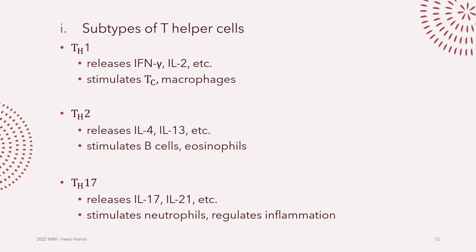T helper cells are not just one type — there are different subtypes. Focus on TH1, TH2, and TH17. TH1 typically releases interferon-gamma and interleukin-2 and is important in stimulating cytotoxic T cells and macrophages. TH2 cells often release IL-4 and IL-13 and stimulate B cells and eosinophils. TH17 cells release interleukin-17 and IL-21 and are involved in stimulation of neutrophils as well as inflammatory regulation. Each subtype stimulates activities of different cells and is associated with different types of cytokines.